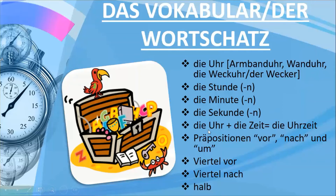When talking about time in general, the word is 'die Zeit'. But if we are talking about the time shown on a clock, we use the word 'die Uhrzeit', which is a compound noun made up of 'die Uhr' and 'die Zeit'.